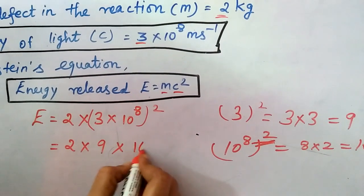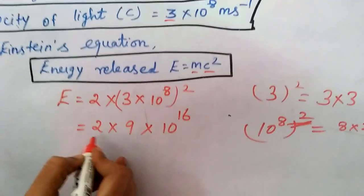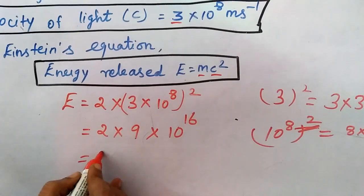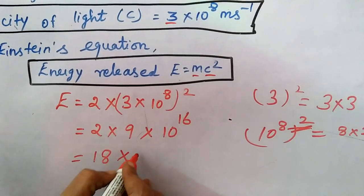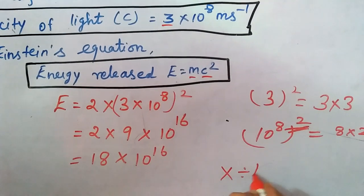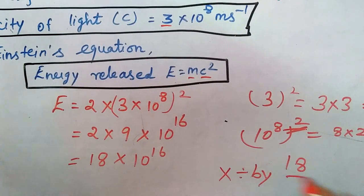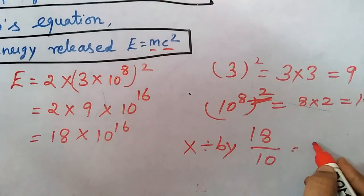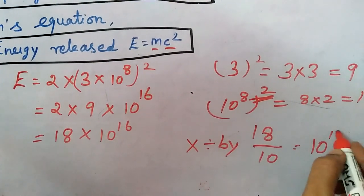Then 9 twos are 18. 18 into 10 power 16. Next multiply and divide 18 by 10 means we will get 10 power 17.